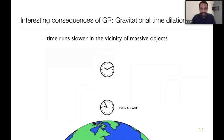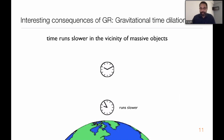Einstein's theory also makes other very interesting predictions. One is that gravity affects the flow of time. For example, if you have two identical clocks - one sitting on the surface of the Earth and another in space several hundreds of kilometers away - the one closest to the Earth would run slightly slower. This was first verified in the 1960s by Pound and Rebka, who showed that gravitational time dilation can be measured even when clocks are separated by a few tens of meters.